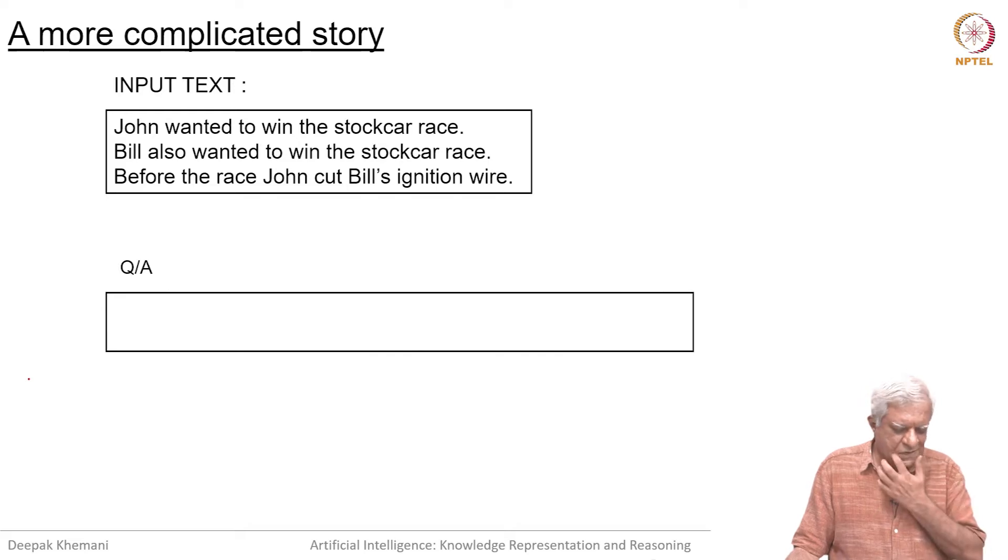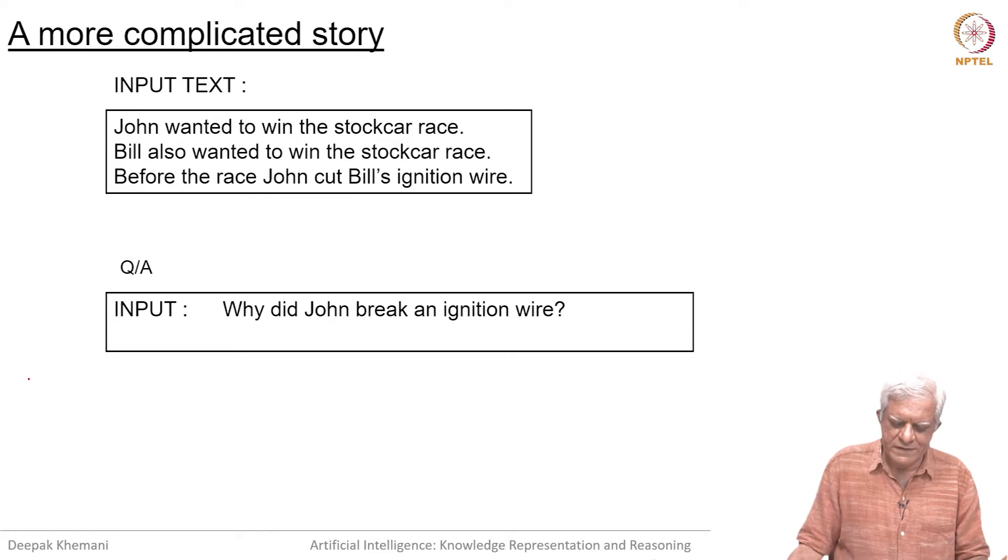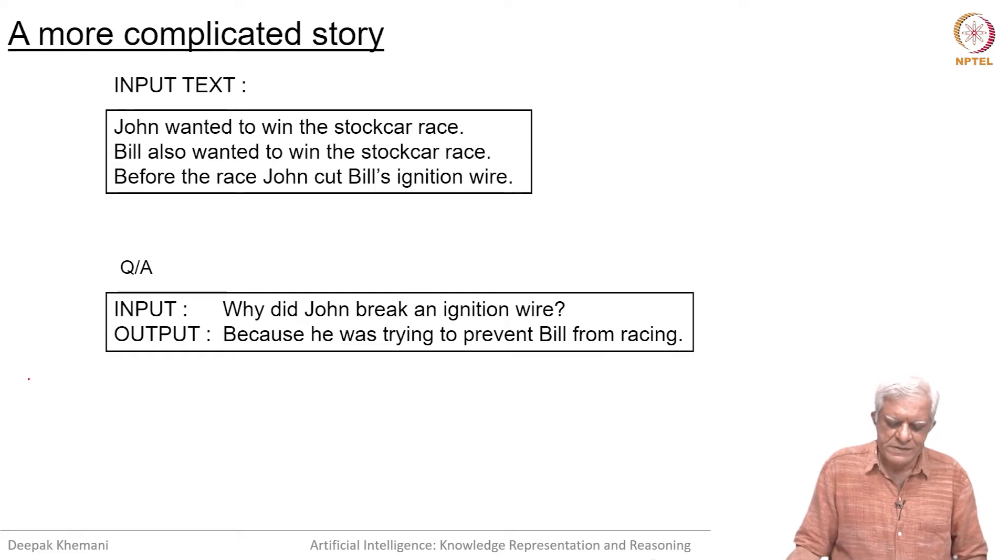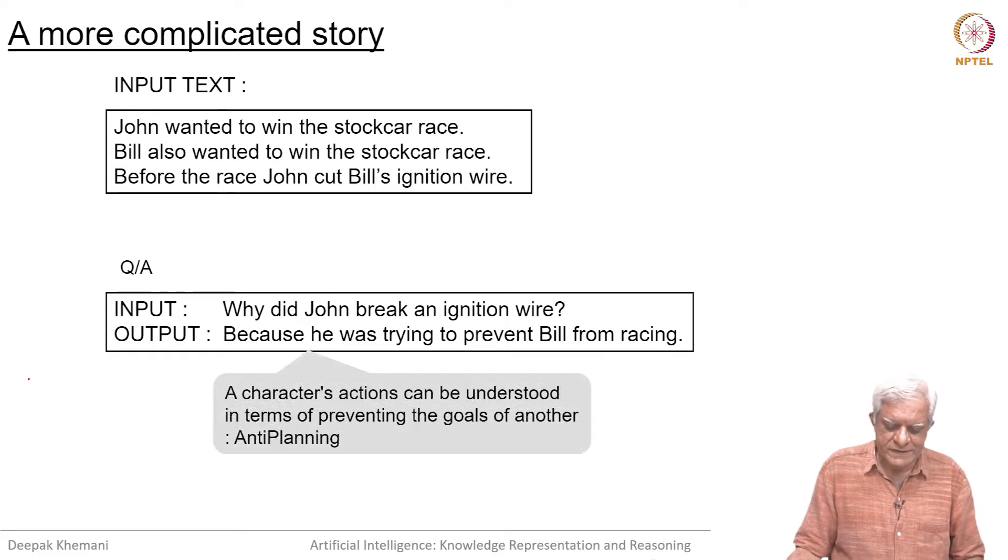Then if you were to ask questions, why did John break an ignition wire? Because he was trying to prevent Bill from racing. Walensky says that this kind of activity is called anti-planning, when a character's actions can be understood in terms of preventing the goals of another character, typically an adversary.